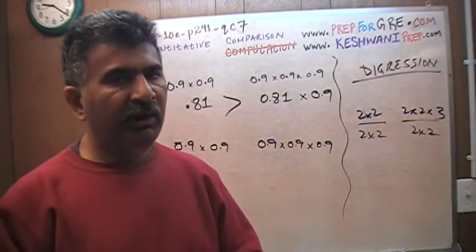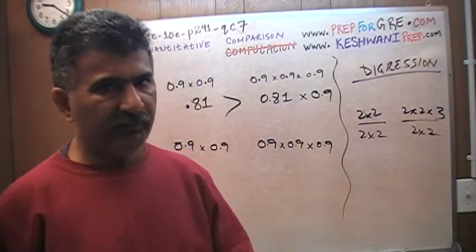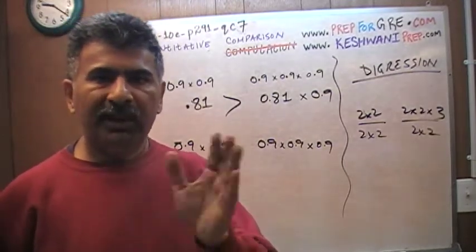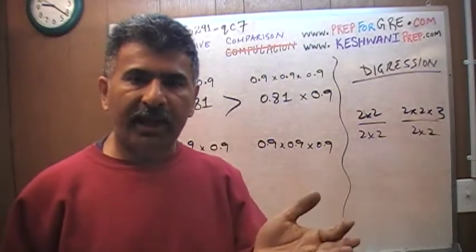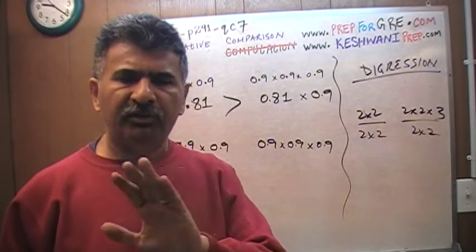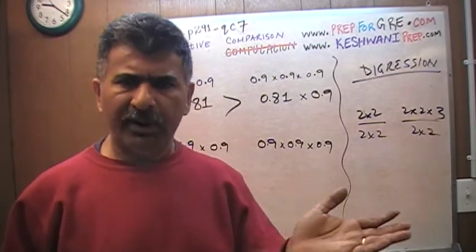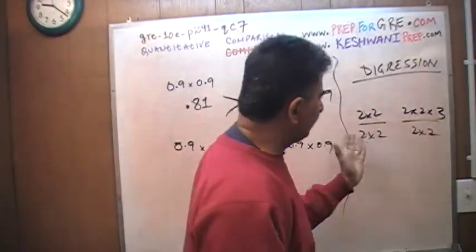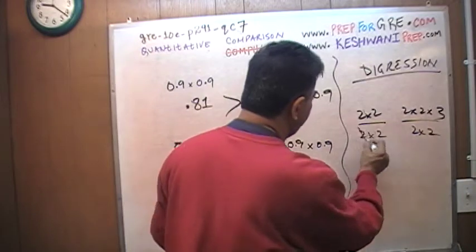Do you understand? But it has to be a positive number. Don't mess with the negative numbers, because negative numbers change the sign. As long as you multiply or divide by, or add or subtract, as long as you multiply or divide by a positive number, or add or subtract the same number, it doesn't change anything. So if I were to divide both columns by 2 times 2, this 2 times 2 cancels out.